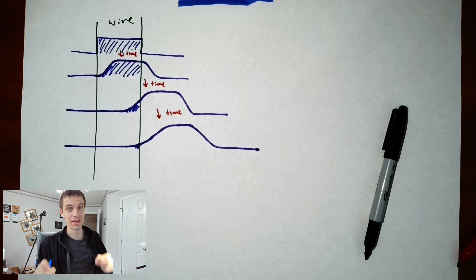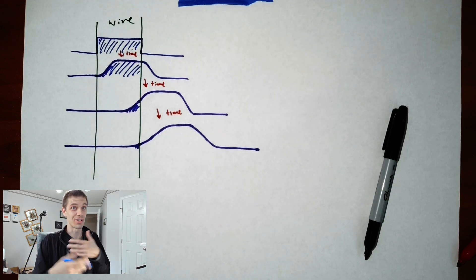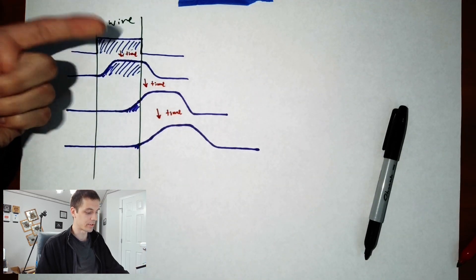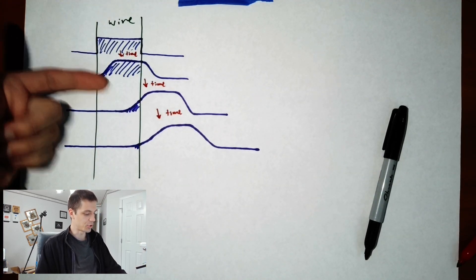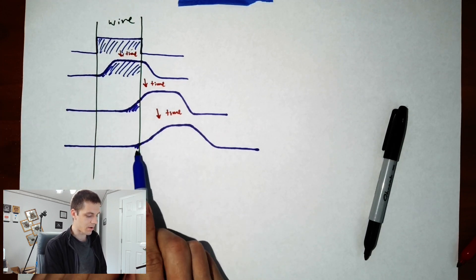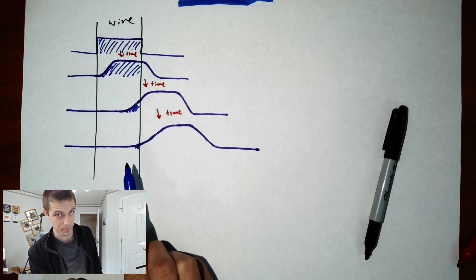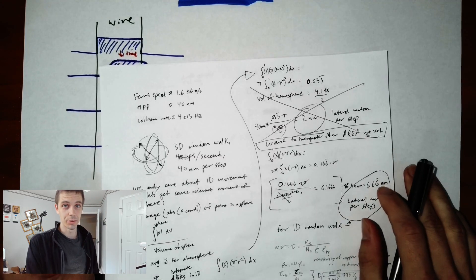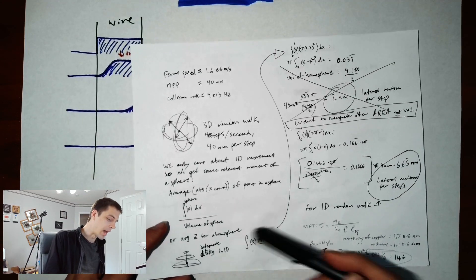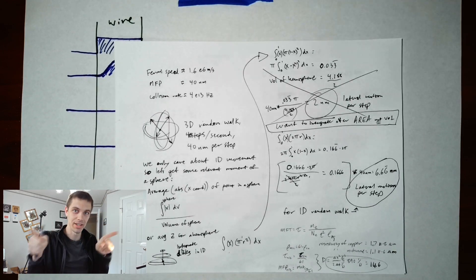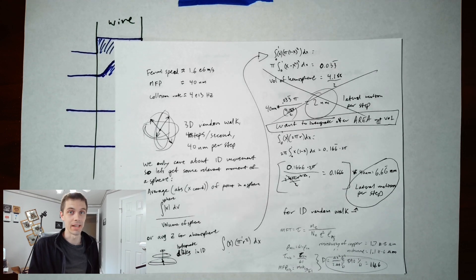If you want to count how many electrons that started in the wire are still there after some period of time, you need to look at the area under this graph. At the beginning, it's all of them. Then as you move down, this gets smaller and smaller. But because of the way this graph curves off, this number never actually goes to zero. That's why it took me a couple hours of math to answer this question properly.